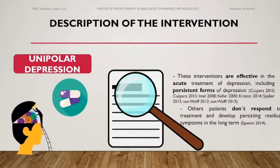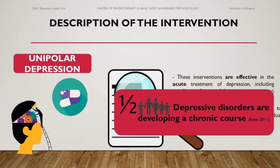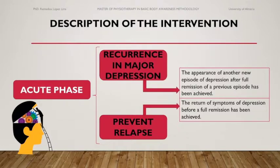Still, there is also evidence that some patients do not respond to treatment, do not reach complete remission, and develop persistent residual symptoms in the long term. It is estimated that half of the people suffering from depressive disorders develop a chronic course. Moreover, acute phase treatments often fail to prevent relapse — defined as the return of symptoms of depression before a full remission has been achieved — and recurrence, defined as the appearance of another new episode of depression after full remission of a previous episode has been achieved, in major depression.